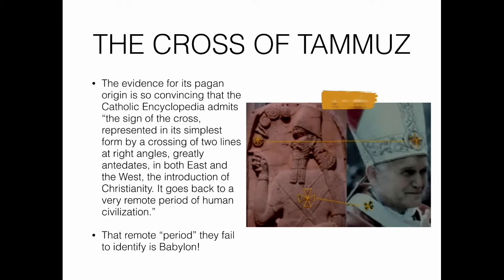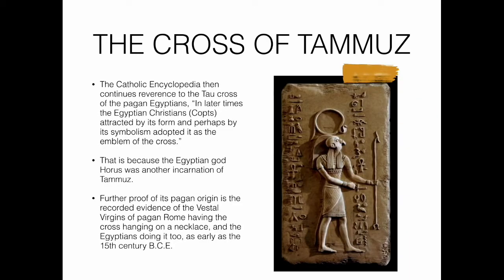To the right you see an image of a statue of Nimrod with a cross outlined in yellow around his neck — the same cross seen in Catholicism on their clothing. The Catholic Encyclopedia continues reverence to the tau cross of the pagan Egyptians, saying: 'In later times the Egyptian Christians, attracted by its form and perhaps by its symbolism, adopted it as the emblem of the cross' — because the Egyptian god Horus was another incarnation of Tammuz.